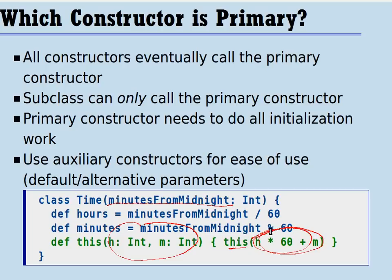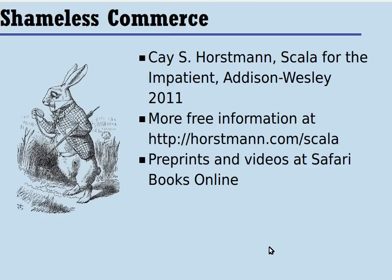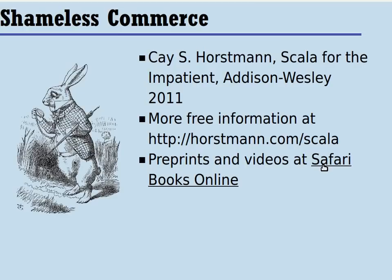We've covered five important rules for how classes differ in Scala and Java, each with impact on design decisions, and we reviewed those in this screencast. Finally, some information: I'm writing a book called Scala for the Impatient to be published by Addison Wesley. More free information is available at the website, and preprints and videos will be available at Safari Books Online if you have a Safari account. Thank you very much for listening, and I hope you enjoyed this screencast.